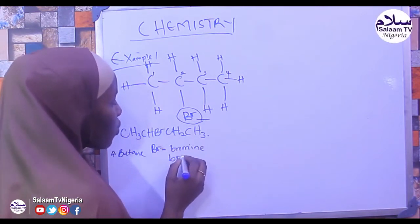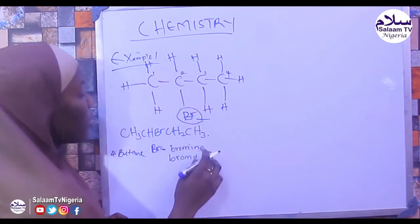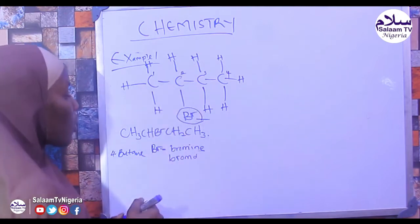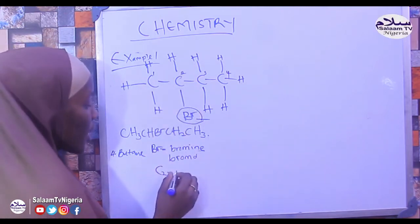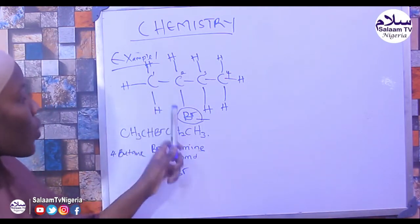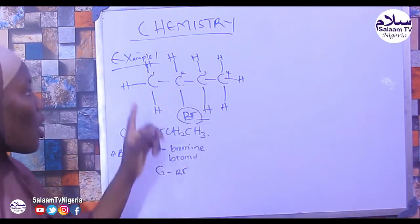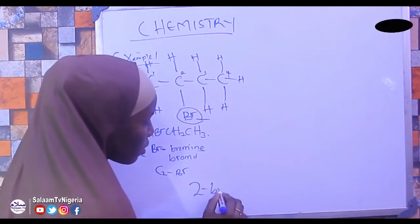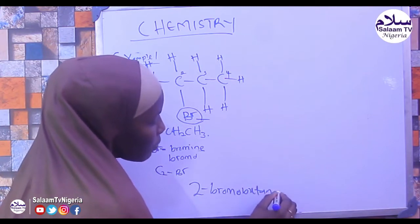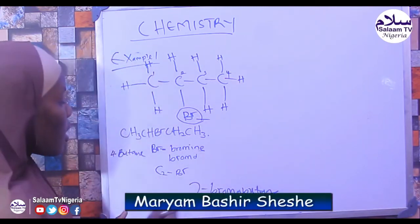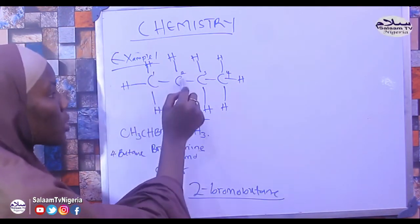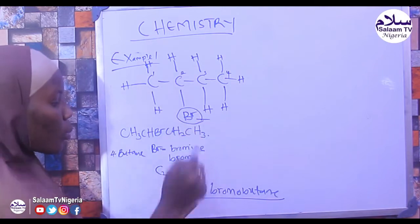Now we identify the position of the substituent. Under carbon 1, 2 — under carbon 2, we have Br. So the bromine is located at position 2 on the chain.